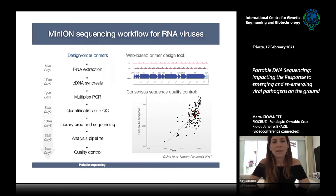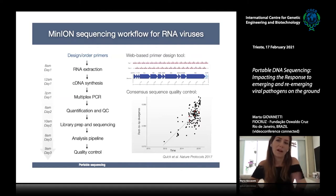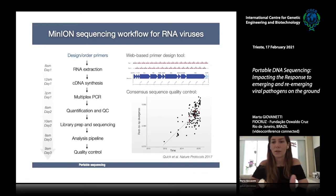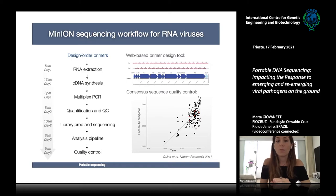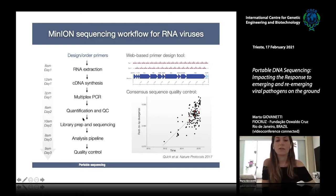This is the workflow we use. All experiments are based on PCR screening by RT-PCR. We select samples for genome sequencing based on the CT value, which needs to be below 32. We then proceed with the multiplex PCR using the generated Primal Scheme, followed by quantification, quality control, library preparation, sequencing, analysis pipeline, and quality control.